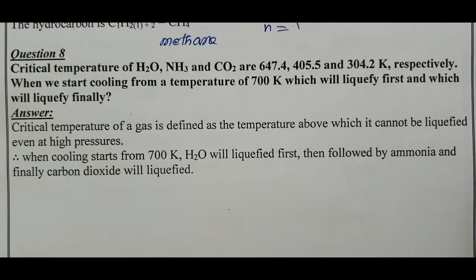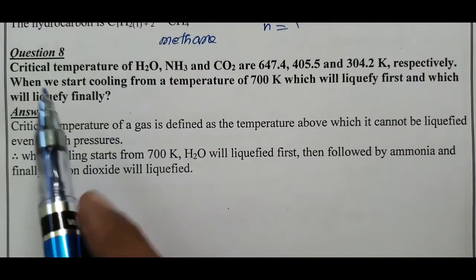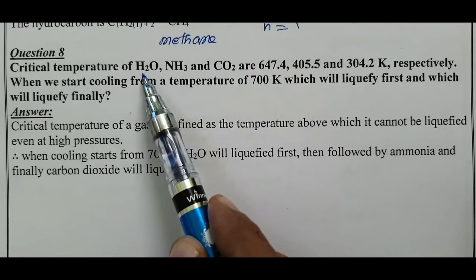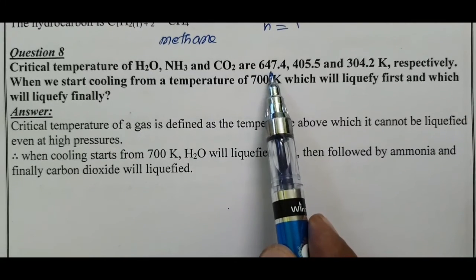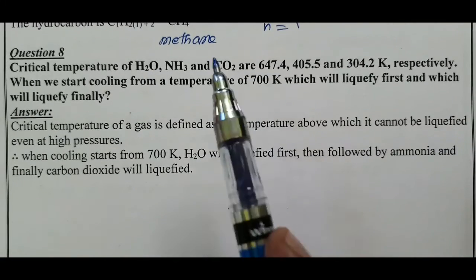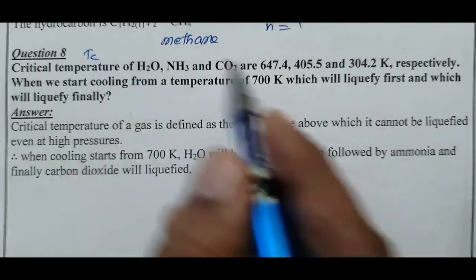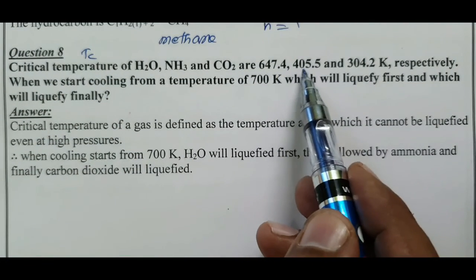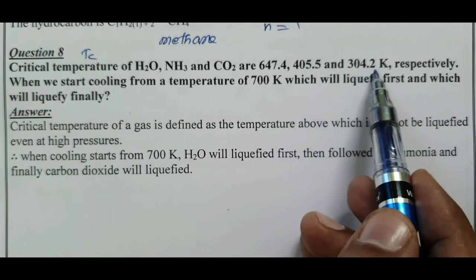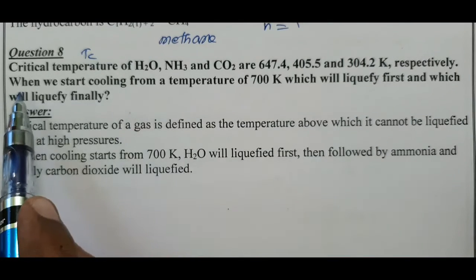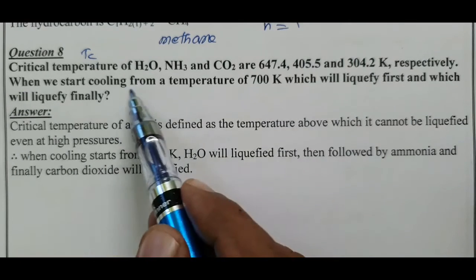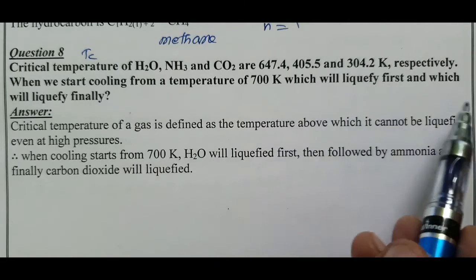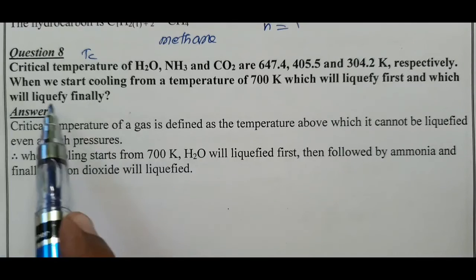Question number 8: Critical temperatures of H2O, ammonia, and CO2 are 647.4, 405.5, and 304.2 K respectively. When cooling starts from 700 K, which will liquefy first and which will liquefy last?